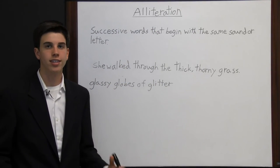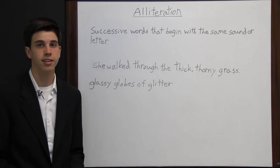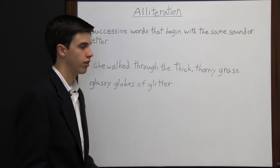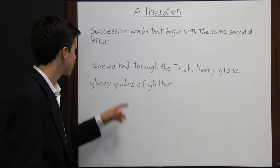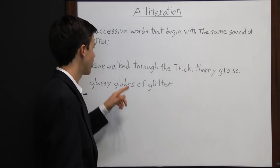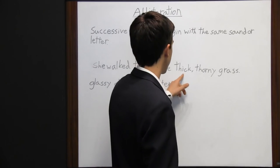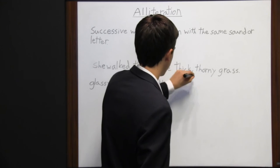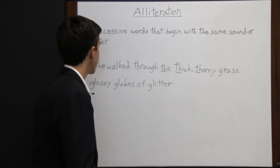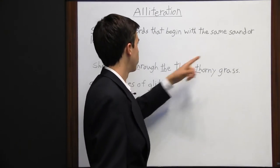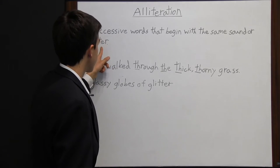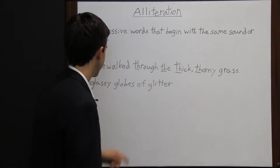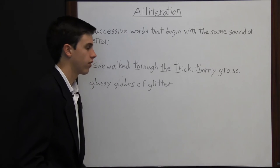Alliteration is a stylistic or literary technique where successive words begin with the same sound or the same letter. Consider this sentence: "She walked through the thick, thorny grass." Notice that through, the, thick, and thorny all start with "th." So remember the definition of alliteration — words that begin with the same sound or the same letter — and that's why this sentence is an example of alliteration.